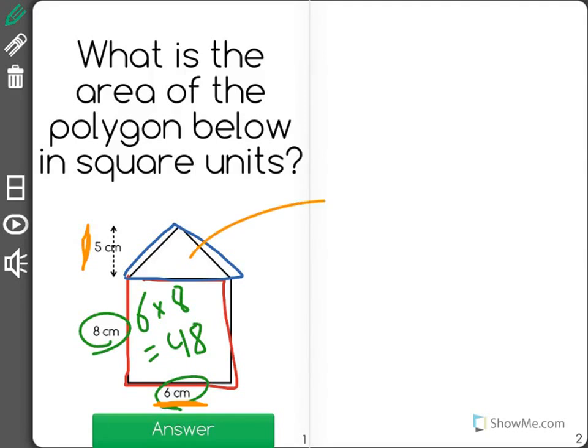So the area of the triangle is one-half times base times height, which is equal to 15.